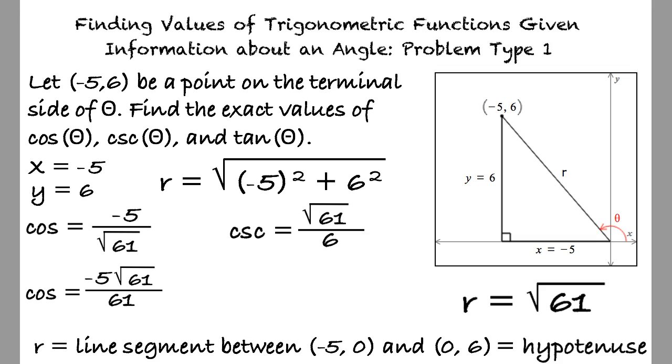Lastly, the tangent is the opposite side over the adjacent, which simplifies to -6 over 5. I think I'm starting to understand this topic, but can we do another quick example just to be sure?